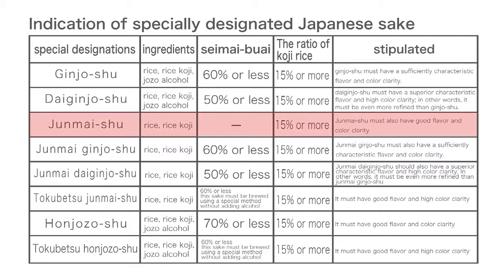Junmai-shu: the ingredients must be rice and rice koji. Jozo alcohol must not be used. There is no specification concerning the polishing ratio. The ratio of koji rice must be 15% or more. Junmai-shu must also have good flavor and color clarity.